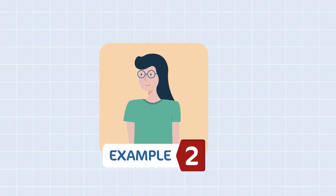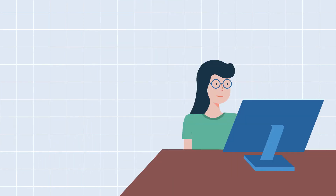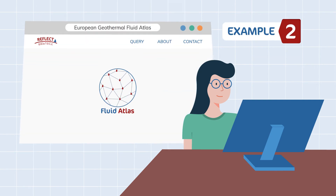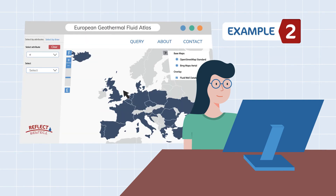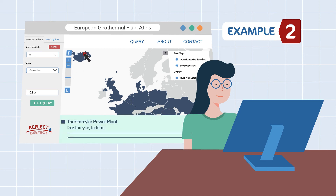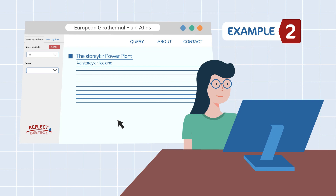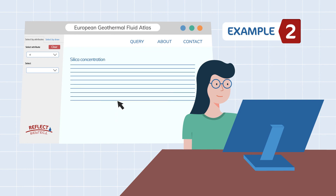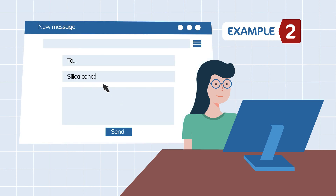A geothermal operator encounters a problem caused by a specific chemical compound in the geothermal fluid — for example, silica scaling. The operator could query the Fluid Atlas for similar silica concentrations, and it would find the Thesterichia power plant. From the references about this geothermal site available on the Fluid Atlas, the operator could either read about the issue and how it was solved, or directly contact the Thesterichia power plant operators to discuss how to avoid silica scaling.